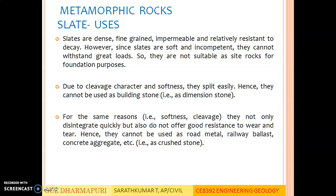Uses of Slate: Slates are dense, fine grained, impermeable and relatively resistant to decay. However, since slates are soft and incompetent, they cannot withstand great loads, so they are not suitable as substrates for foundation purposes. Due to cleavage character and softness, they split easily; hence they cannot be used as a building stone or as a dimension stone. For the same reasons of softness and cleavage, they not only disintegrate quickly but also do not offer good resistance to wear and tear. Hence, they cannot be used as road metal, railway ballast or concrete aggregate.